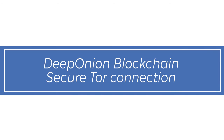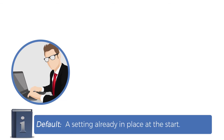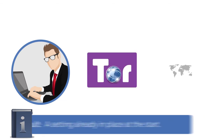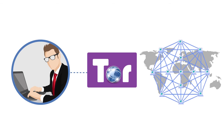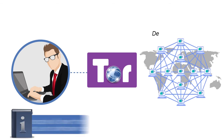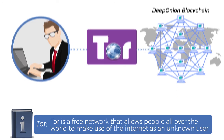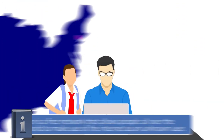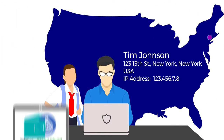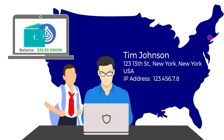DeepOnion blockchain secure Tor connection. By default, all DeepOnion users securely and anonymously connect to the anonymous Tor network first before they are connected to the DeepOnion blockchain. Since the launch of DeepOnion, all users have connected to the DeepOnion blockchain without their name and other personal details, like their IP addresses.